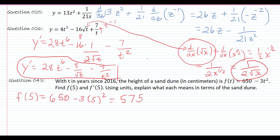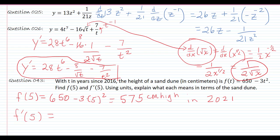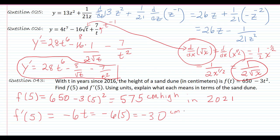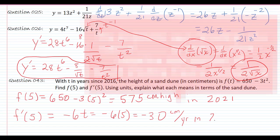What this 575 means is that the sand dune will be 575 centimeters high in the year 2021. Now for the derivative: the derivative of 650 is 0, and minus 3t squared gives us minus 6t. Plugging in 5, I get negative 30, which is the rate in 2021 — centimeters per year in 2021.